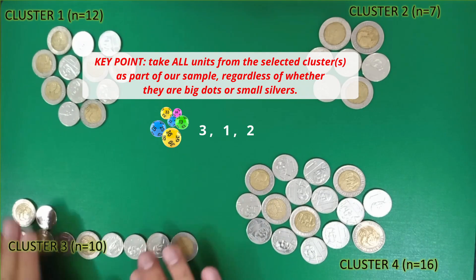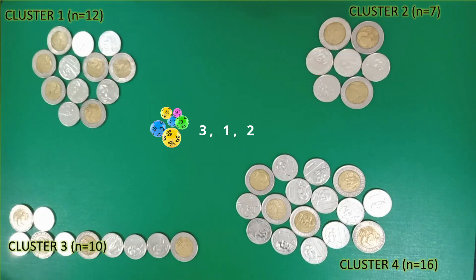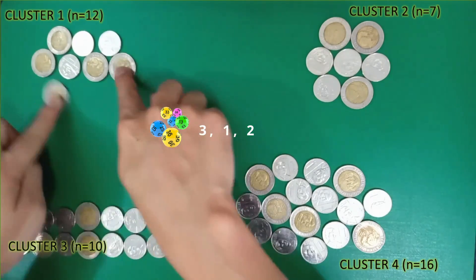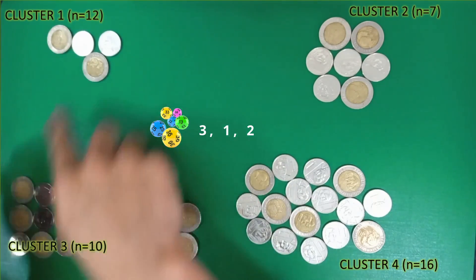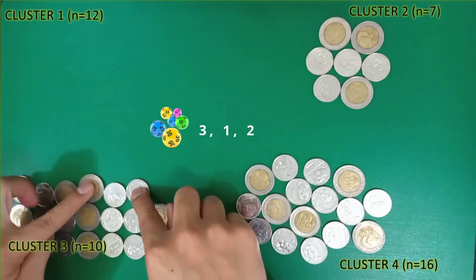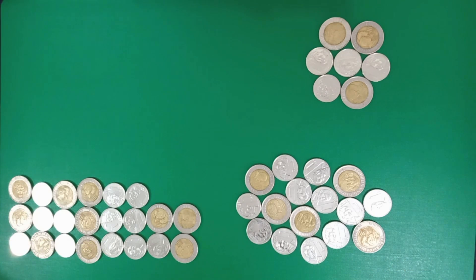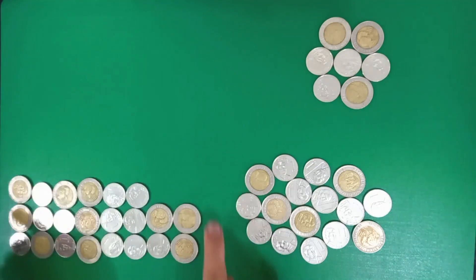At this point, we only have 10 samples but we need 20. So we go to the cluster corresponding to our next random number, which is cluster 1, and again take all sampling units there — all 12 of them — as part of our study. At this point, we already reached our effective sample size of 20. In fact, we have 22 total samples: 10 coming from cluster 3 and 12 coming from cluster 1. So we can end our cluster sampling. These 22 coins will be the ones who will get to participate in our survey.